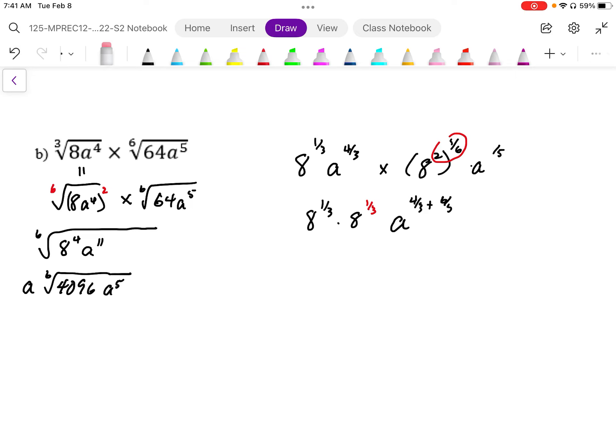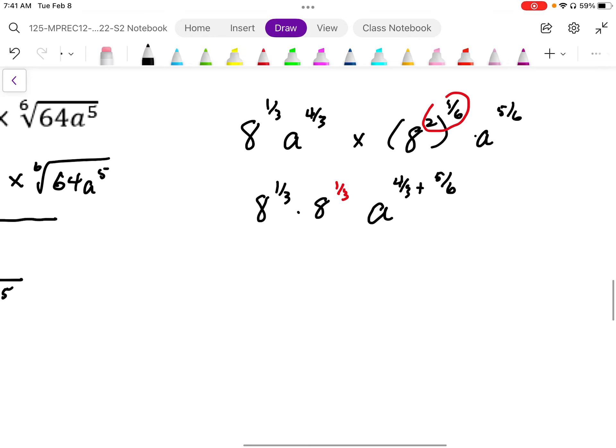Sorry, 5 over 6. That should be 5 over 6. And this should be 5 over 6 as well.